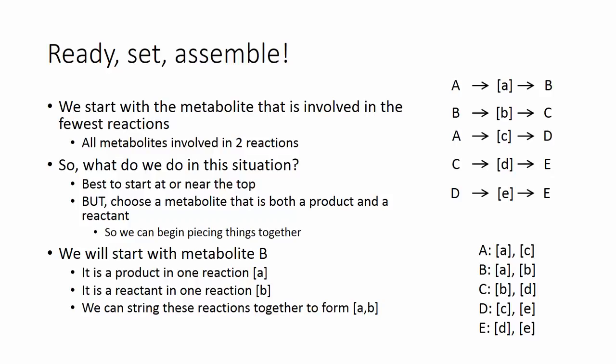So we start with a metabolite that is involved in the fewest reactions. But in this case, all metabolites are involved in two reactions. So what do we do in this situation? It's best to start at or near the top. But we want to choose a metabolite that is both a product and a reactant so we can actually begin to piece things together. So let's start with metabolite B. It's the product in one reaction. Reaction A is the reactant in reaction B. You can see it right there.